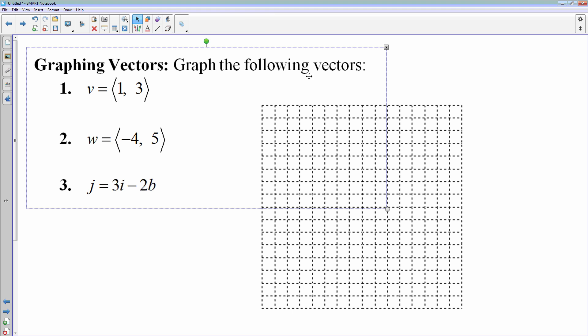First, we're going to talk about how to graph a vector. These are in component form, numbers 1 and 2. The first number is your horizontal component. The second number is your vertical component. So if we're going to graph vectors...